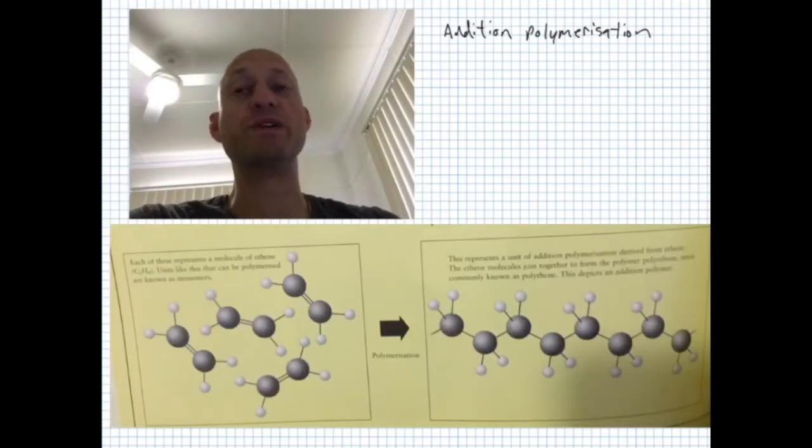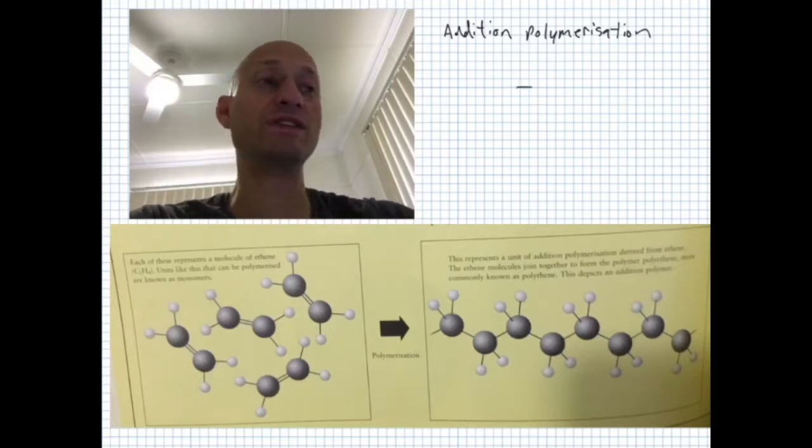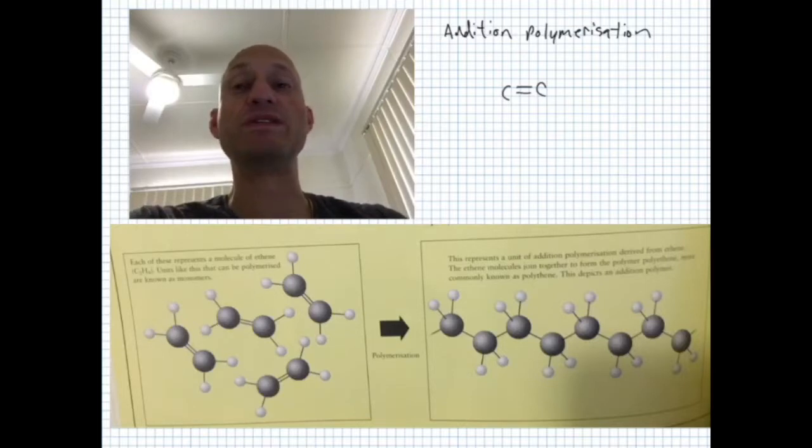Here is an example of addition polymerization. This form of polymerization occurs when an unsaturated hydrocarbon—that's a hydrocarbon with a double bond—breaks open so that one bond can be used to link to the other.